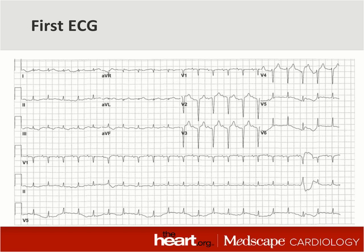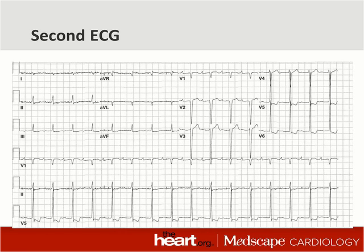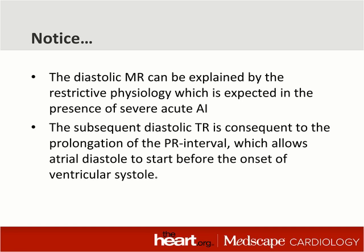Let's take a look at the first electrocardiogram. Notice that the PR interval is normal — probably in the vicinity of about 160 to 180 milliseconds. Contrast that with the second electrocardiogram, where the PR interval is approaching 280 milliseconds — much longer. The diastolic tricuspid regurgitation is not consequent to the aortic endocarditis per se, because the aortic regurgitation doesn't increase the filling pressures on the right ventricle, only on the left ventricle. However, because the PR interval has prolonged, we now allow the presence of atrial diastole to occur before the onset of ventricular systole, allowing the driving force of tricuspid regurgitation to start in diastole because ventricular systole is delayed.